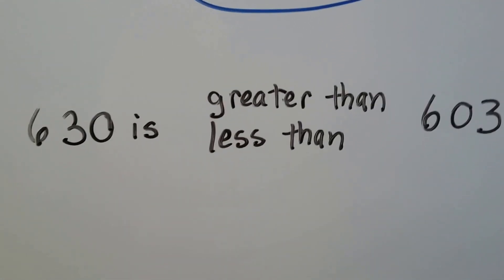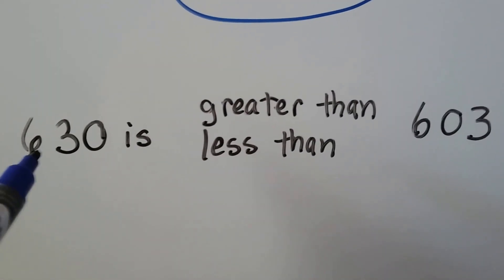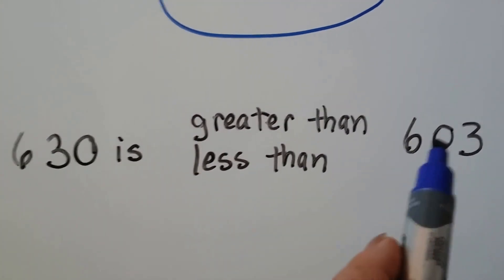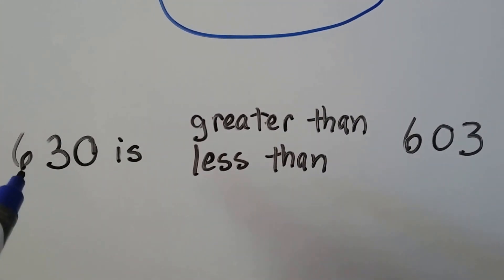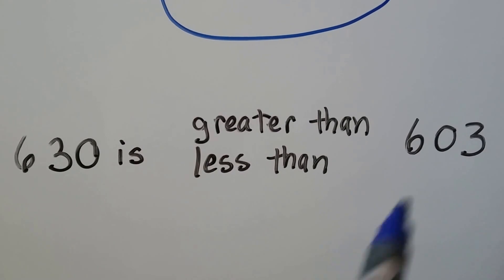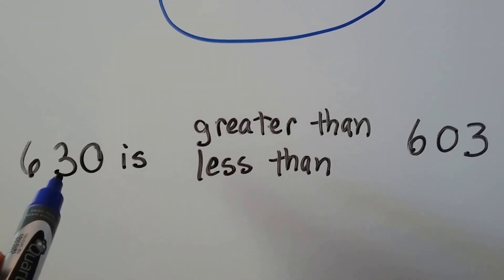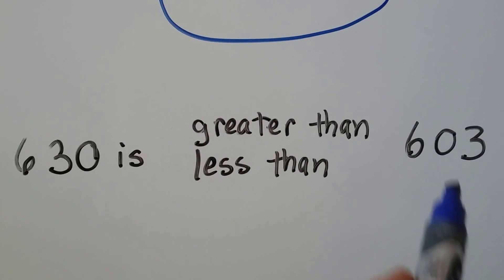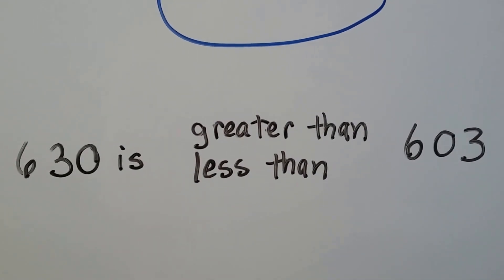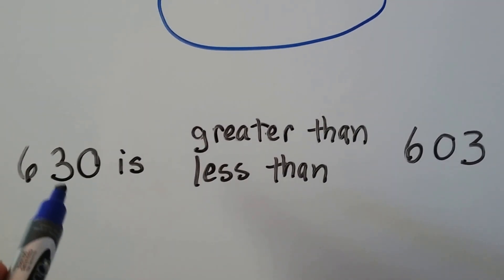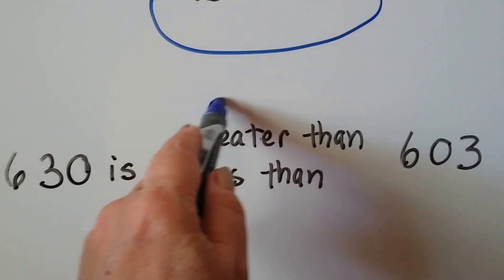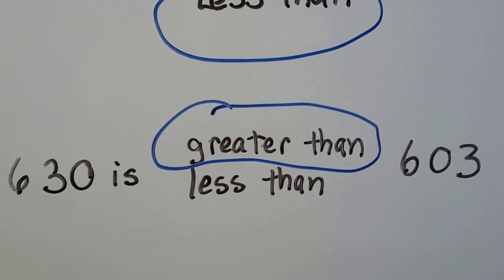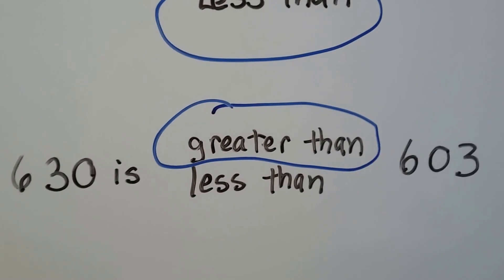Let's try this one. 630 is greater than or less than 603. They both have six in the hundreds place, so let's look at the tens place. This has a three in the tens place; this has a zero in the tens place. Right away we can see that this has more tens, so 630 is greater than 603.